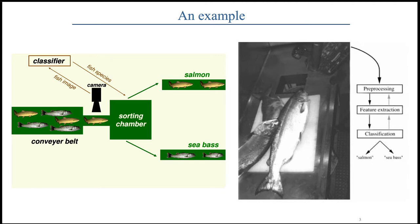Let's talk about classification. Before we go into how a machine learning system does it, let's present a problem and work through how a person might solve it. There is a fish sorting machine. This research comes courtesy of our friends north of the border, where there's lots of fishing going on. Into a conveyor belt, we get a bunch of different fish that are either sea bass or salmon, and a camera takes an image to sort the fish into the right piles.